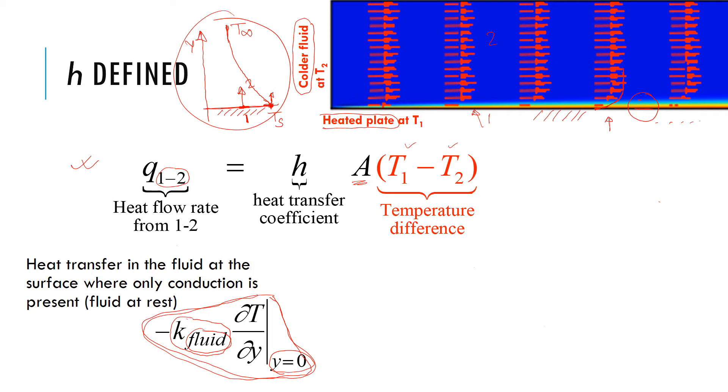So this is all the heat that goes out from 1 to 2. It has to go through first this layer that's at rest. So, in other words, this is all the heat that's coming out.